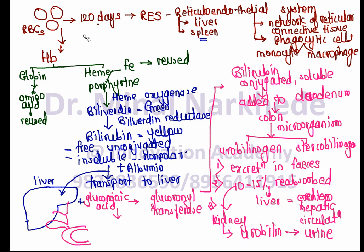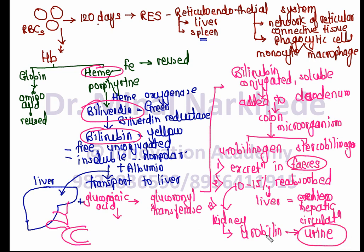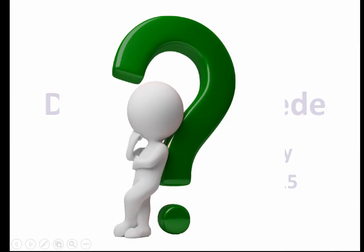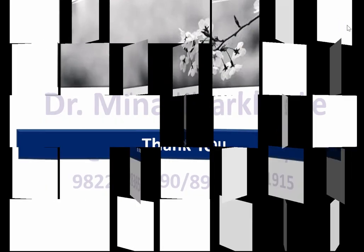To summarize: bile pigments — biliverdin and bilirubin — are formed because of the enzymatic breakdown of the heme part of hemoglobin, and are mainly excreted in the form of feces and urine. This covers the answers to all four questions about the formation of bile pigments. If you have any queries, please put a comment in the description box. Thank you.